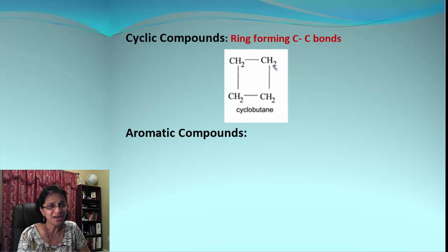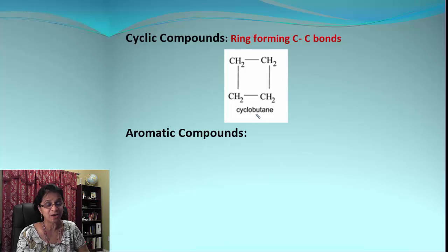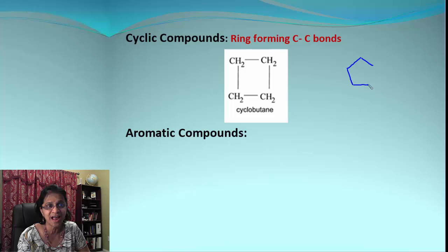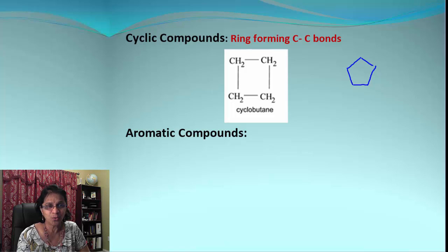The next one in the series is cyclic compounds — these are alkanes which turn into a ring. We get different shapes: we can have cyclobutane with four carbon atoms in a ring, or a five-carbon atom ring, and so on. These are called cycloalkanes.